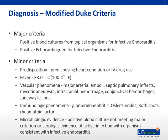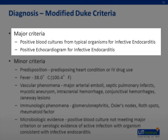The diagnosis of endocarditis is made by following the modified Duke criteria. The first major criteria is a positive blood culture from typical organisms, which should come from two separate blood cultures and include viridans streptococci, Streptococcus bovis, HACEK group, Staphylococcus aureus, or community-acquired enterococci in the absence of a primary focus. The second major criteria is a positive echocardiogram, defined as an oscillating intracardiac mass on valve or supporting structures or on implanted material in the absence of an alternative anatomic explanation. Other positive findings include an abscess, new partial dehiscence of prosthetic valve, or new valvular regurgitation.